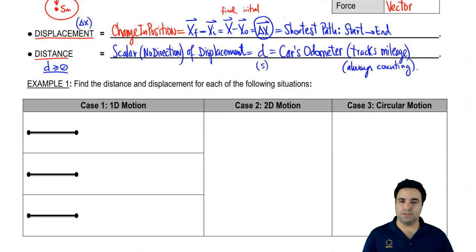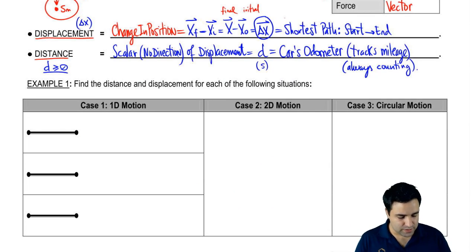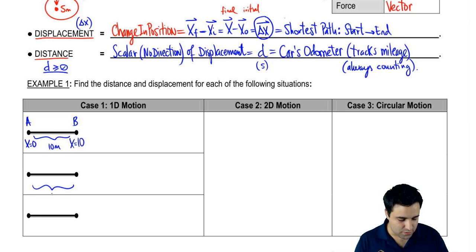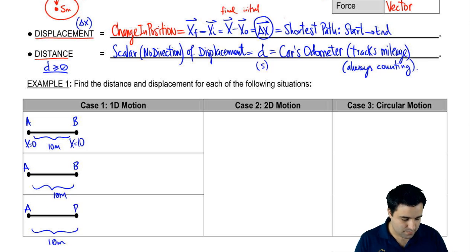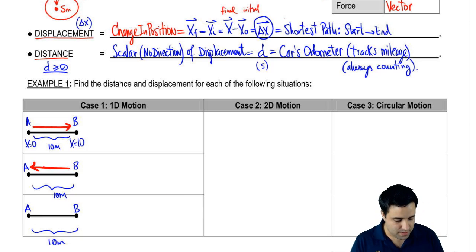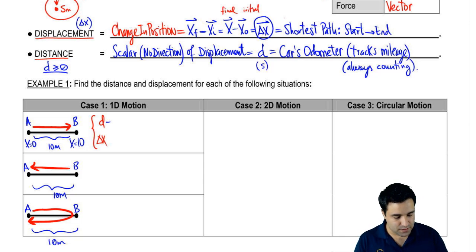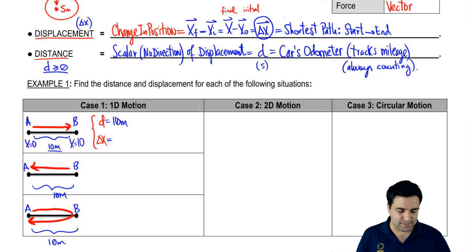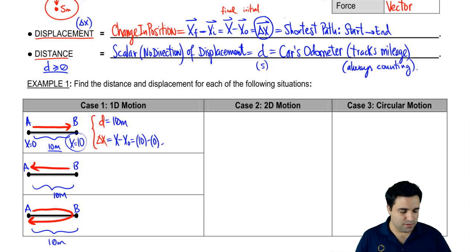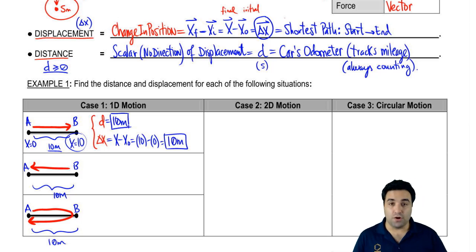Let me show you three examples to illustrate this: one-dimensional motion, two-dimensional motion, and circular motion. In this case, I'm going from A to B. There are two points, A and B, ten meters apart — position A is zero, position B is ten. So the distance going from A to B is 10 meters. Delta X is X-final minus X-initial: your final position is 10, minus your initial position of zero, so delta X equals 10. These numbers happen to be the same here.